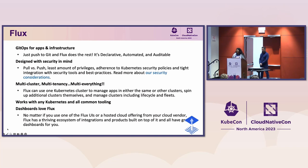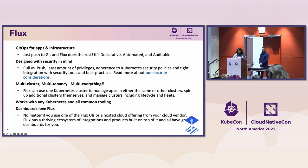Flux is multi-cluster, multi-tenancy, and multi-everything. You can use one Kubernetes cluster to manage apps in the same or other clusters, spin up additional clusters, and manage cluster lifecycles and fleets. It works with any Kubernetes and common tooling — GitHub, GitLab, Bitbucket, S3-compatible sources, OCI registries, Helm, Harbor, custom webhooks, and notifications. Dashboards love Flux too: there are different Flux UIs, hosted cloud offerings from your cloud vendor, and a thriving ecosystem of integrations built on top of it.